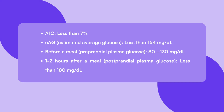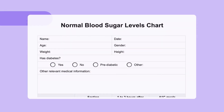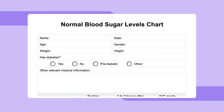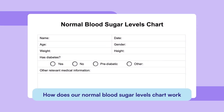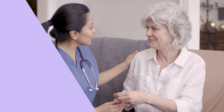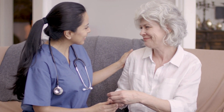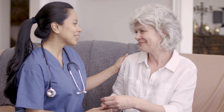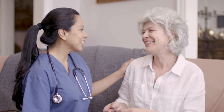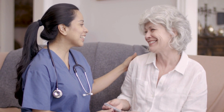How does our normal blood sugar levels chart template work? This tool is invaluable for both healthcare professionals and patients. It outlines target blood sugar ranges depending on the time of day and meals. By referencing these guidelines, healthcare professionals can determine whether a patient's blood sugar falls within the normal range.